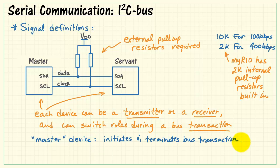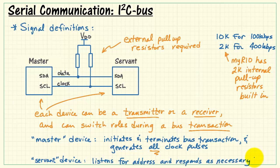The device designated as the master is responsible for initiating and terminating the bus transaction, and it's also responsible for generating all clock pulses. The servant device listens for its address to be called by the master and then responds as necessary.